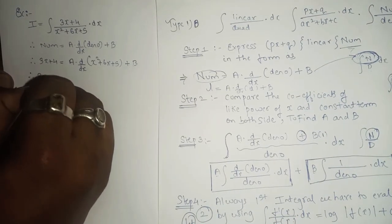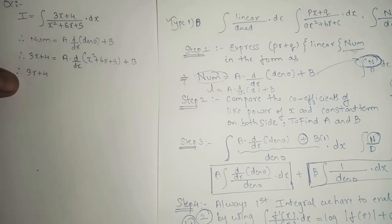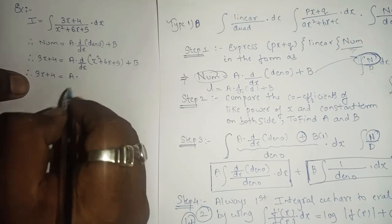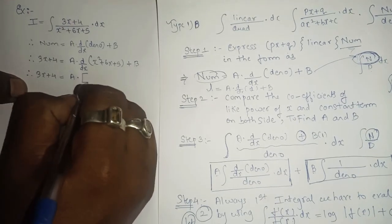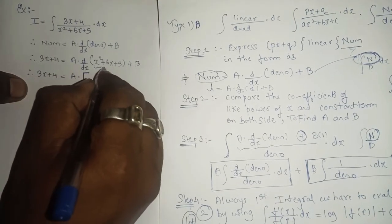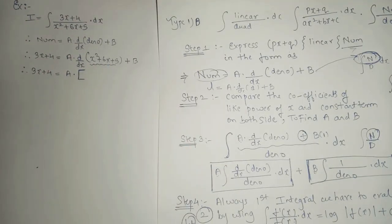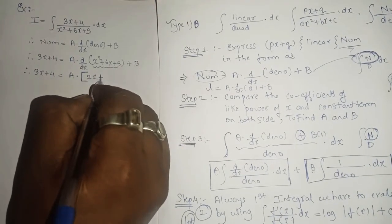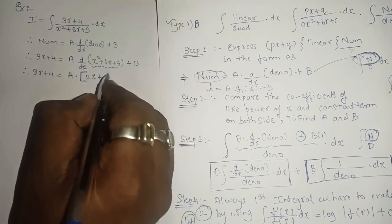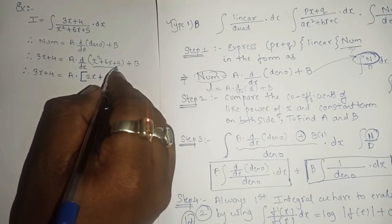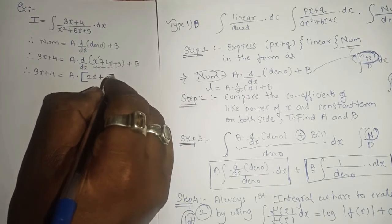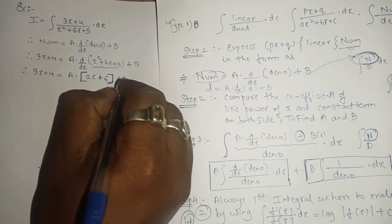We keep 3x plus 4 as it is, equals A times the derivative of x squared plus 6x plus 5. The derivative of x squared is 2x, derivative of 6x is 6, and derivative of 5 is 0. So we write only 2x plus 6, plus B.